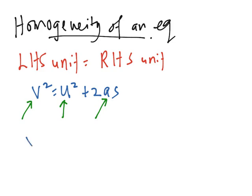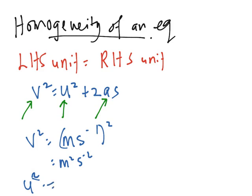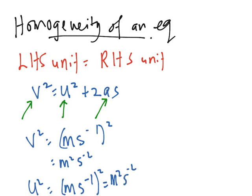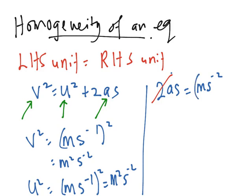Let's check it out. v² has units of meters per second, and when you square it, you have m²s⁻². u² equals ms⁻¹ squared, giving m²s⁻². For 2as, there is no need to include the 2 — cancel off the 2. So a is ms⁻² and s is meters, giving m²s⁻².